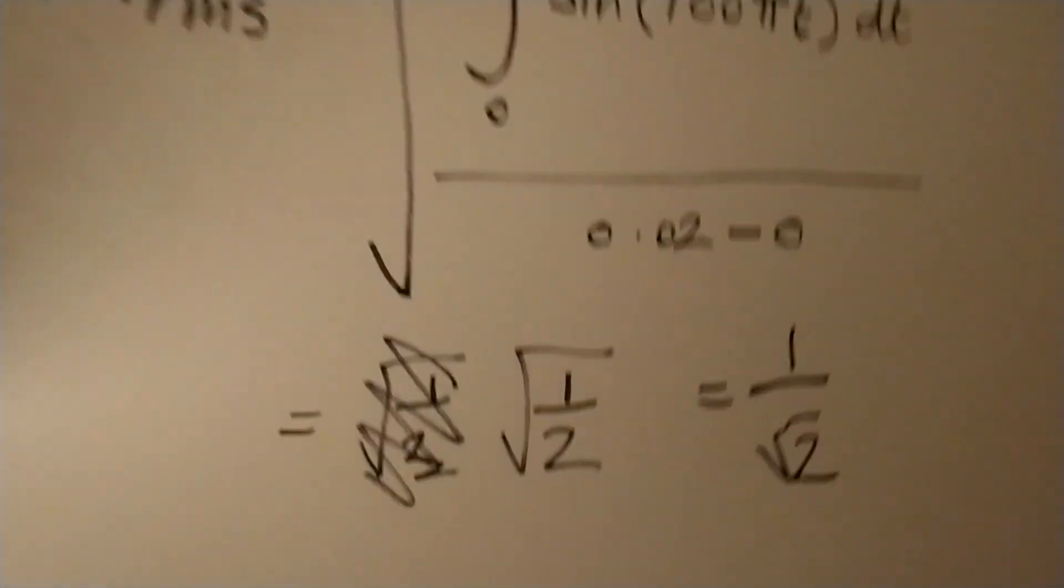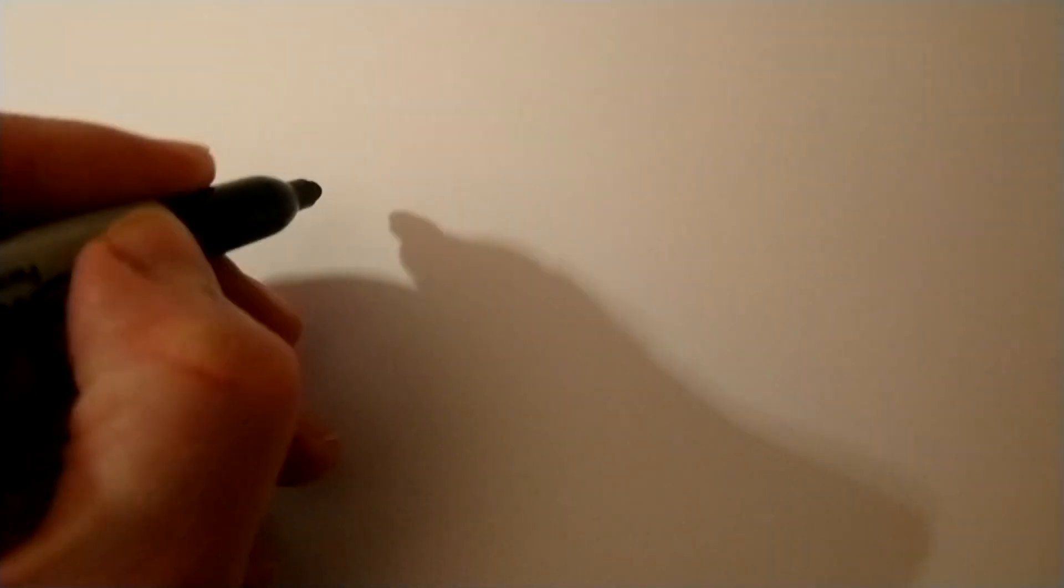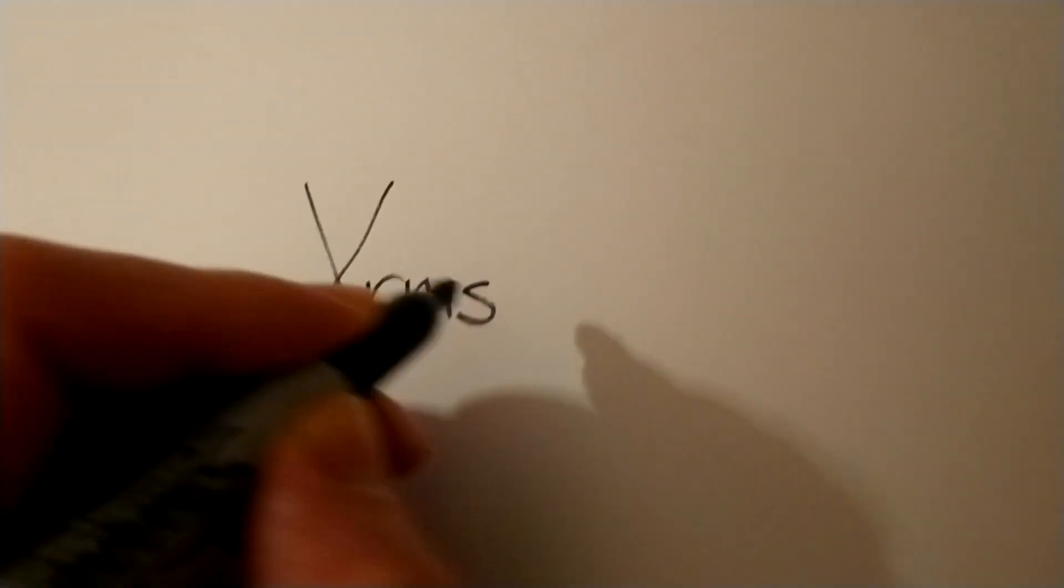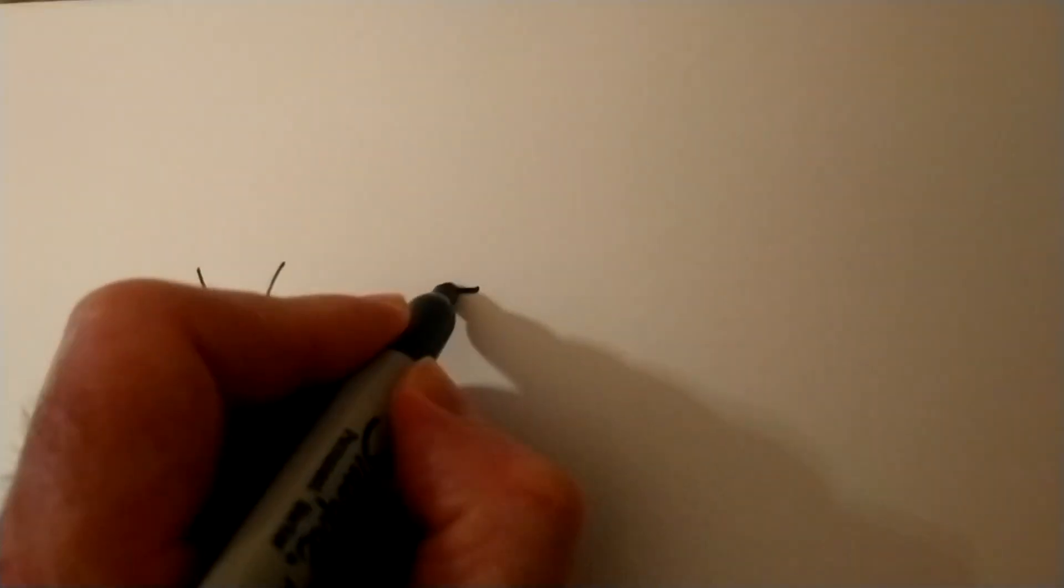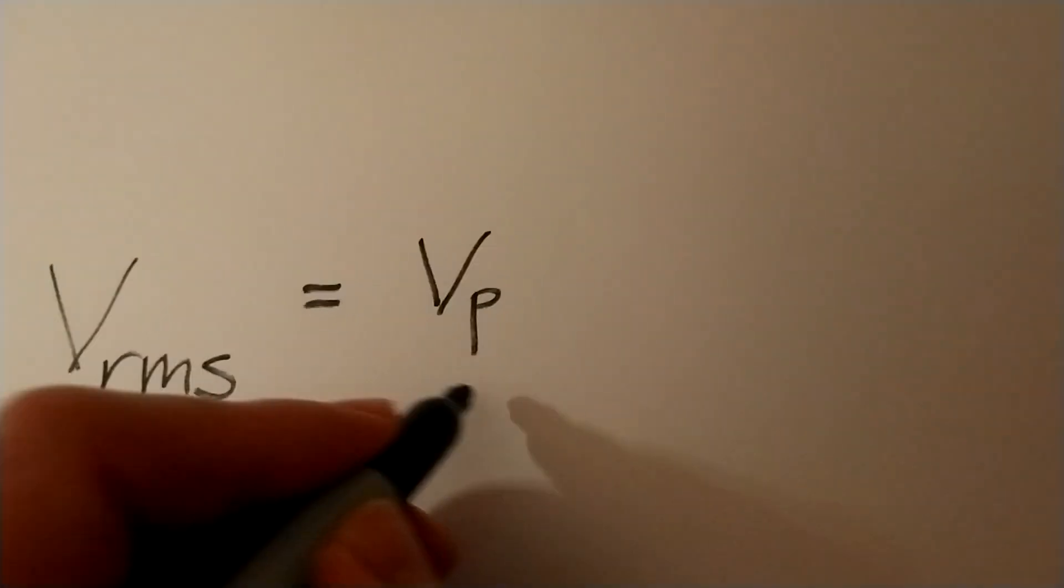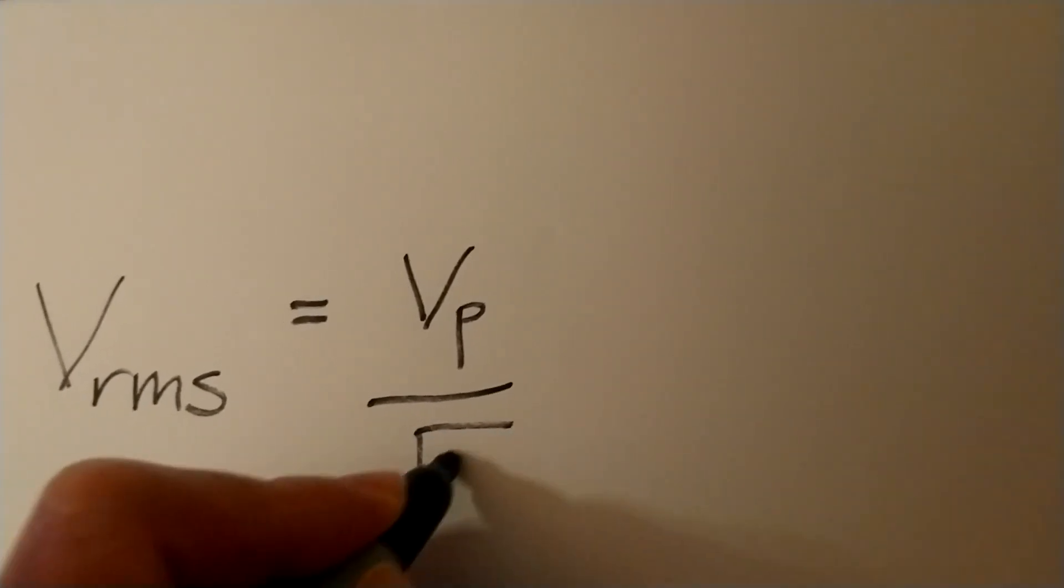OK, so that went a bit messy there, but I'll just tidy up a little bit on the next page. So what we've just seen is the final result. I did a simplified version of this, but hopefully this will give you the idea. The root mean square voltage is equal to the peak voltage divided by root 2.